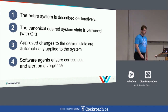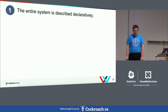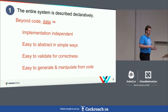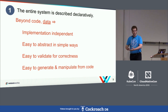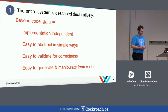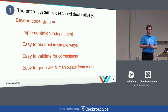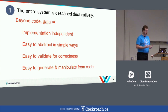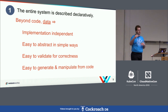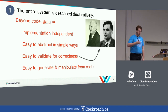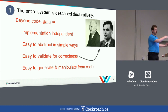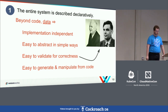The first principle is the entire system is described declaratively — everything in our system is described as data, not just code. Data is implementation independent; you don't need a particular tool to deal with it. Even novice programmers within their first six weeks can read and write structured data. It's easy to validate for correctness, which is non-negligible. With infrastructure-as-code defined as a set of steps, verifying correctness takes you all the way to the halting problem. It's much easier to validate data than code that defines your infrastructure.